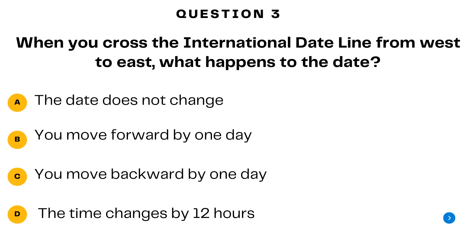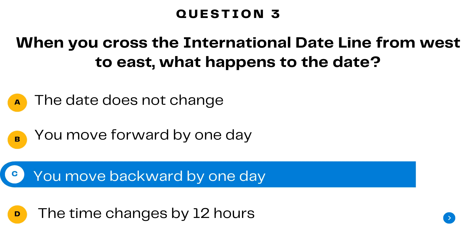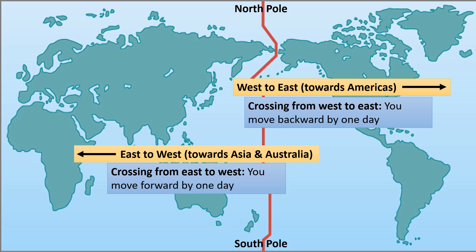Question number three. When you cross the international dateline from west to east, what happens to the date? A. The date does not change. B. You move forward by one day. C. You move backward by one day. Or D. The time changes by 12 hours. The answer is C — you move backward by one day. When you cross the international dateline from west to east, you move backward by one day.